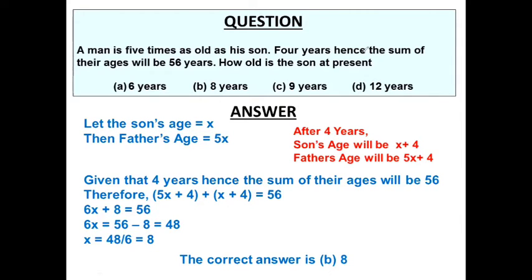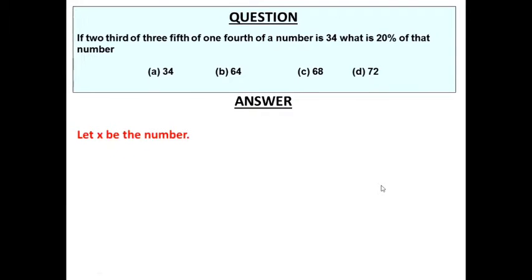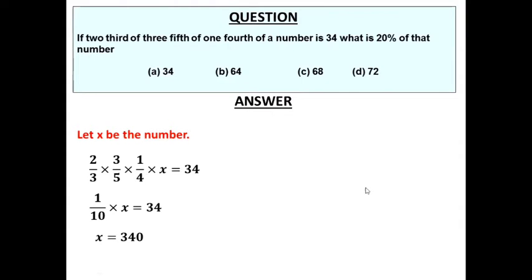The next question: if two-thirds of three-fifths of one-fourth of a number is 34, then what is 20 percent of that number? Using this condition, let us crack this question. Let that number be x. The condition given is: two-thirds of three-fifths of one-fourth of x equals 34. That is, (2/3) × (3/5) × (1/4) × x = 34.